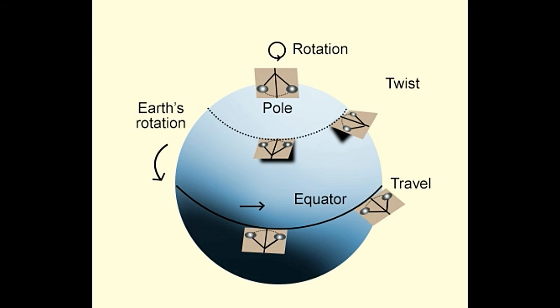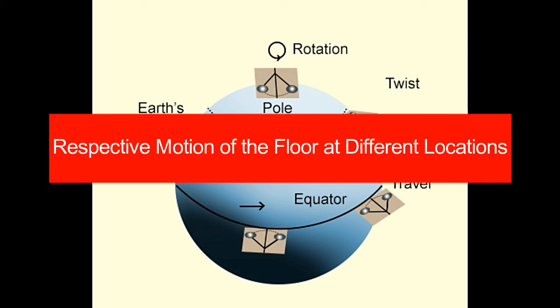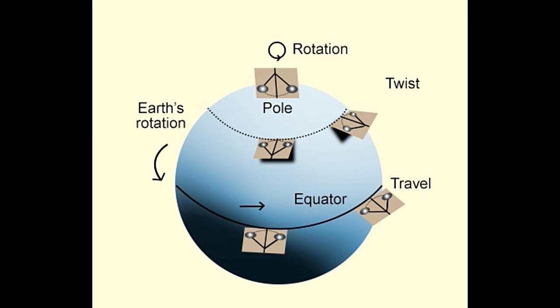Respective motion of the floor at different locations. If the experiment is carried out exactly at either the north or the south pole, the earth and building floor will rotate beneath the pendulum's plane taking one sidereal day, 23.93 hours, to complete the rotation and make all the pegs fall.